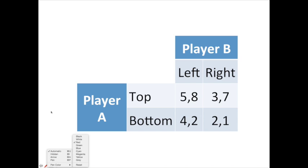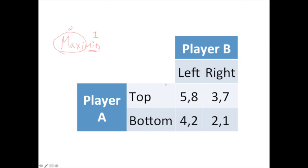When looking at a maximin strategy, our goal is to identify the best possible outcome of the worst possible outcomes. First, figure out the minimum payoffs for each strategy, then pick the strategy that maximizes those minimum payoffs. The idea is that you're a pessimist — you don't want a terrible outcome, so you look at the worst possible results and pick the best of those. This focuses on minimum payouts, and we stay focused on strategies.